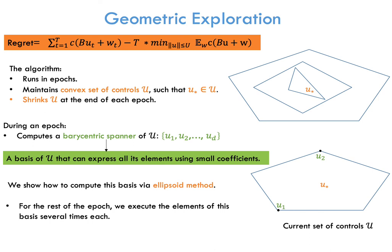For the rest of the epoch, we execute the controls that belong to this basis several times each. By applying these controls, we generate states that give information about the directions of the matrix B that are most relevant for the current set of controls U. This information allows us to eliminate suboptimal controls and further shrink our set U.